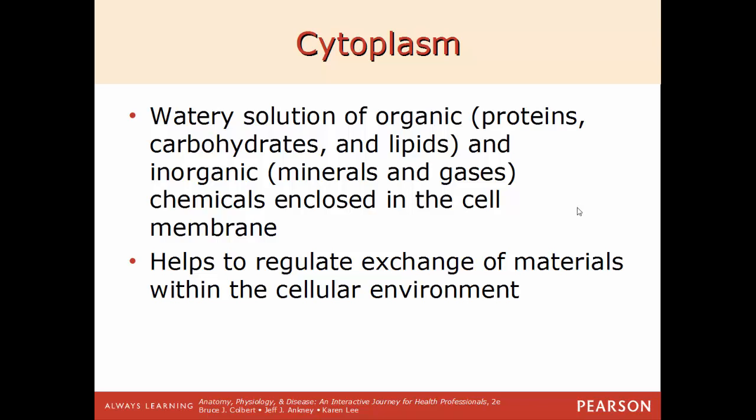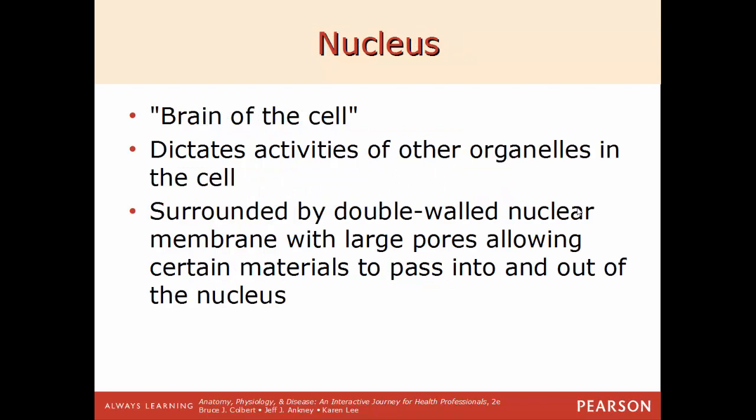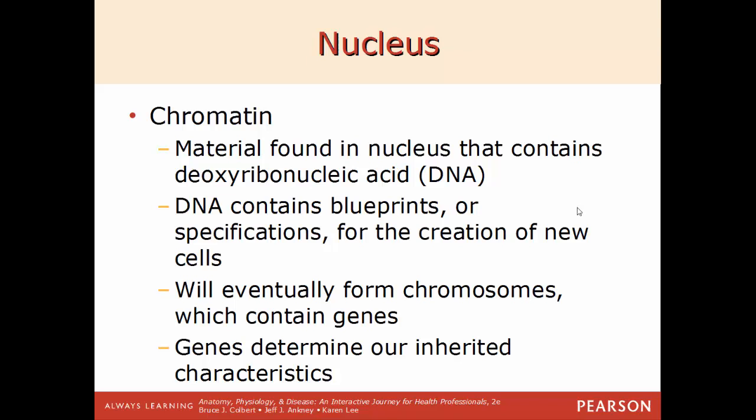Now moving into the various organelles and structures of a general cell. The cytoplasm is a gel-like, watery solution of organic and inorganic chemicals found within the cell membrane. This is where proteins, carbohydrates, lipids, and organelles are found, and it helps regulate the exchange of materials within the cell. The nucleus is the command center or brain of the cell, dictating to other organelles what they should be doing. It is surrounded by a double layer of phospholipids called the nuclear envelope or nuclear membrane.